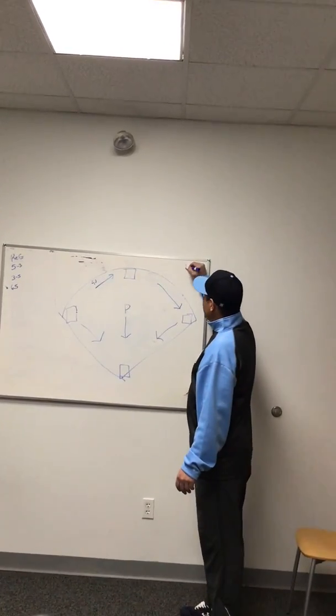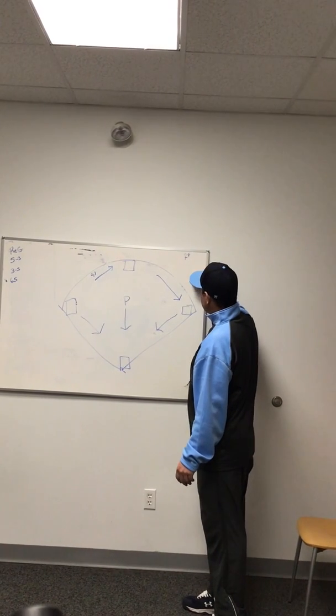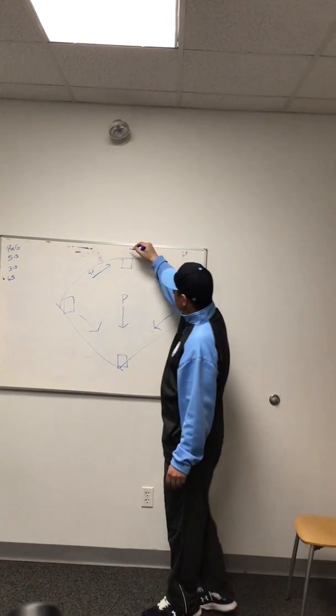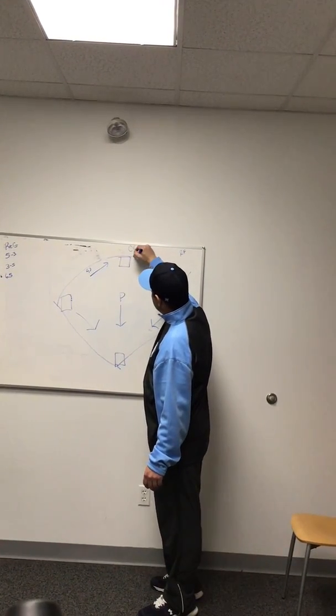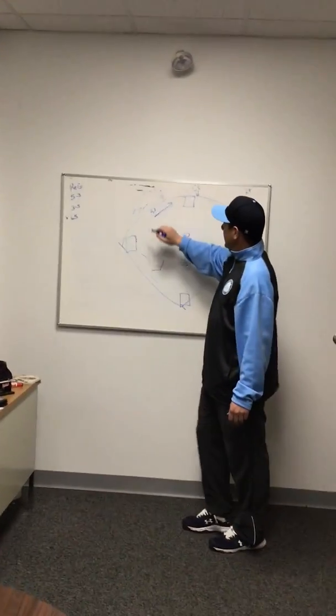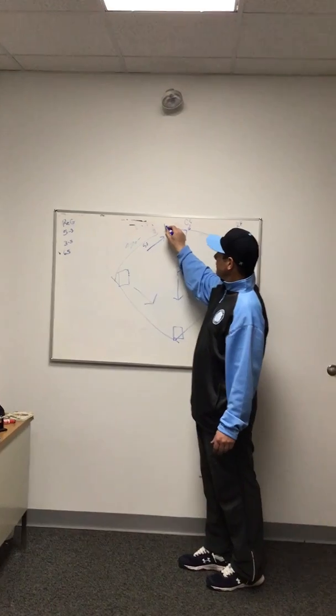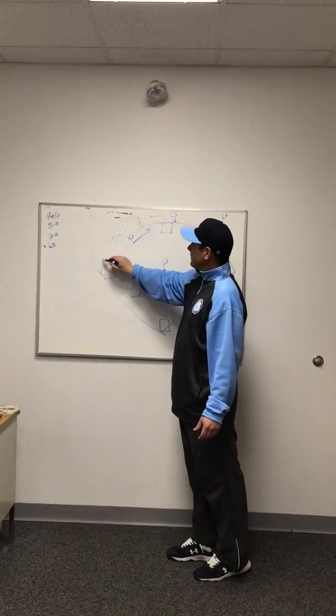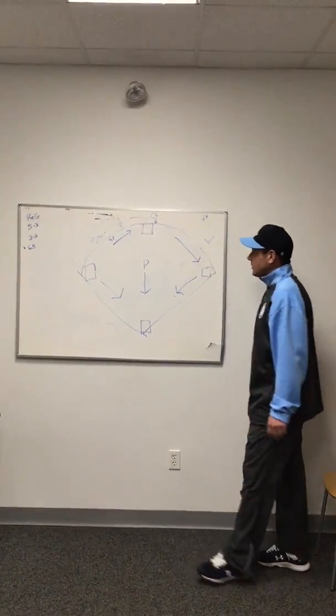Right field, you need to get down here, be backing up first base. Center field, backing up second. Left field, kind of get yourself moving this way to either move over and back up center in second, or for some strange reason the play develops and gets into third base, you want to be moving there.